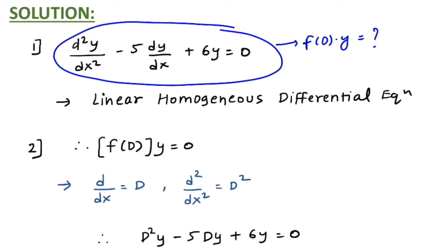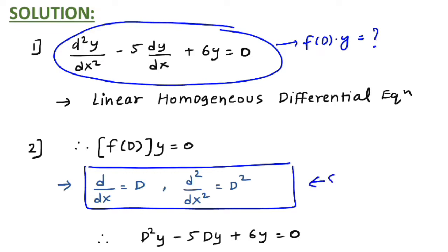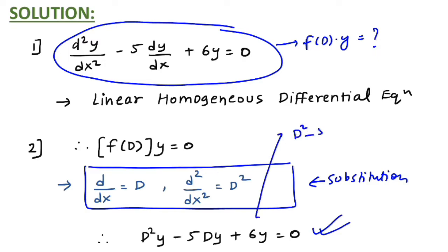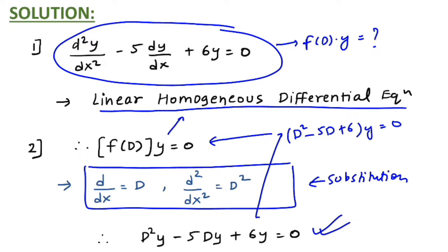The first task is to convert the given differential equation into the format f(D)·y = something. After performing the substitution, we get D²y − 5D·y + 6y = 0, which rearranges to (D² − 5D + 6)·y = 0. This matches the format f(D)·y = 0, confirming our differential equation is homogeneous.